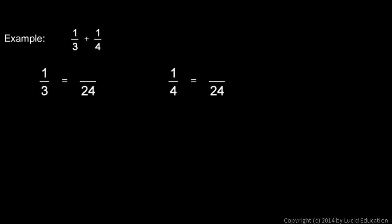Now watch this example. This is instructive. I'm told to add 1 3rd and 1 4th. They're unlike fractions, so I need to write them as like fractions, and I've got it set up here to write each one with a denominator of 24.